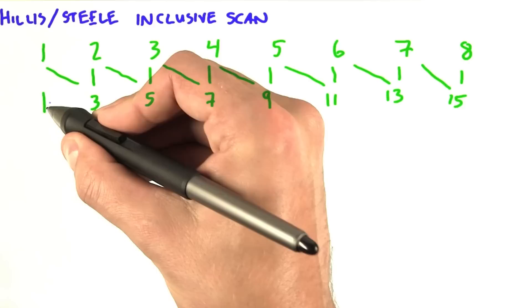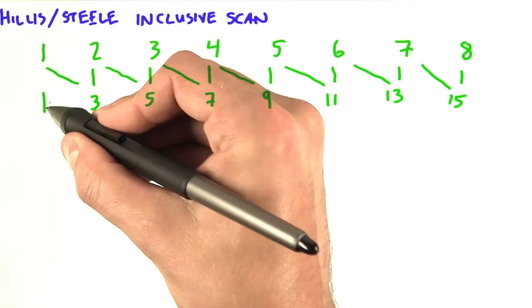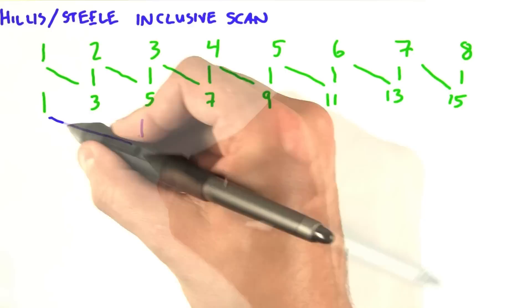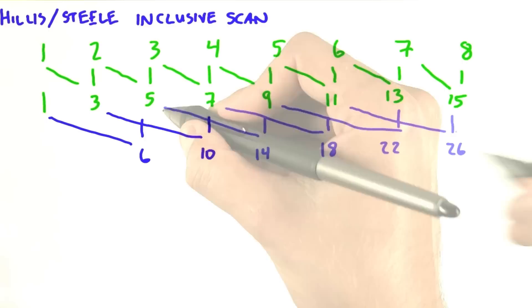Stage 2 is going to involve adding yourself to your neighbor 2 to the left. So let's see how that's going to work. 1 plus 5 gives you 6, 3 plus 7 gives you 10, and so on. And again, if you don't have a neighbor 2 to the left, then you just copy your value down.